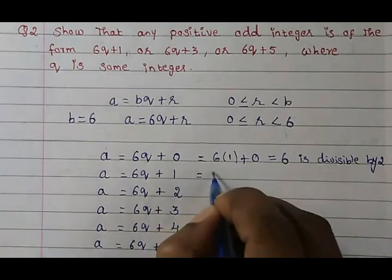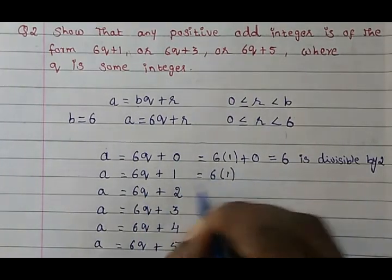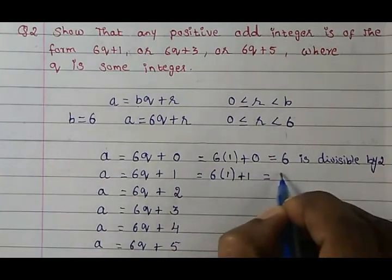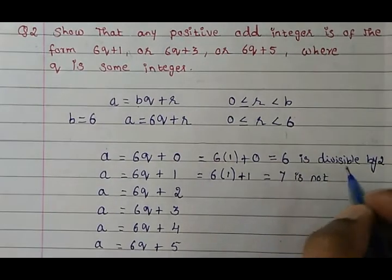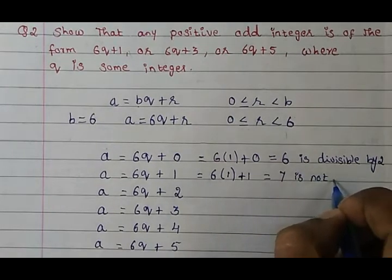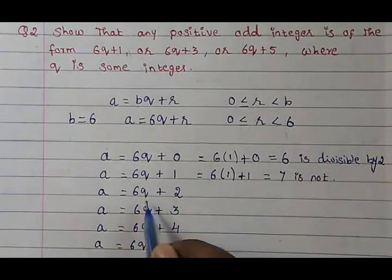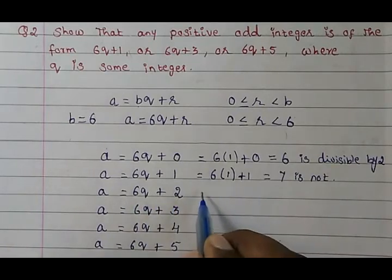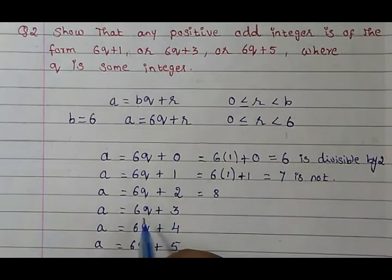In the same way, let's try it out this. 6 in the place of q let's write down 1 and plus 1. What will we get? 6×1 = 6 plus 1, 7 which is not divisible by 2. Same way 6q, if you write in the place of 1, 6×1 = 6 plus 2, 8. So 8 will be divisible by 2.